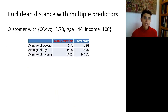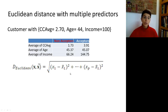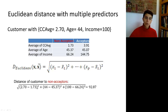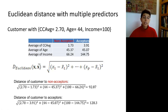Let's move on to more predictors. Suppose that now we're not only looking at credit card average spending, but also including the age of the customer and their income — so we have a profile with three predictor values. We can compute the centroid for the non-acceptors and similarly for the acceptors. To compute Euclidean distance, we use the ordinary formula: subtract 2.70 from 1.73, separately subtract 44 from 45.37, and 100 from 66.24. We square each difference and take the square root. This gives us the Euclidean distance from the centroid of the non-acceptors class, and the same can be done for the acceptors class.